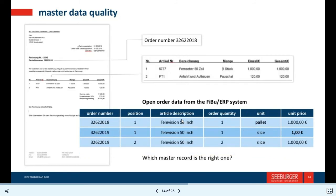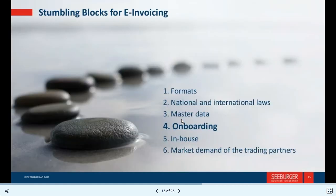Order data shown on screen includes order number, position, article description, order quantity, unit, and unit prices. This illustrates the master data quantity verification needed for e-invoicing.